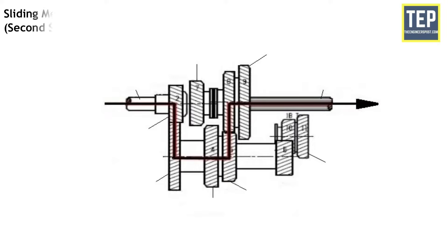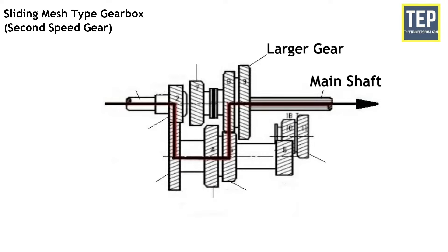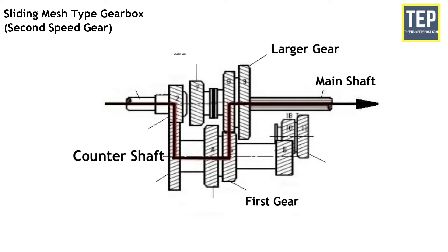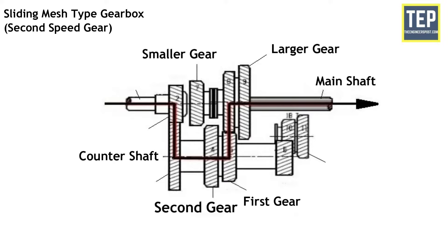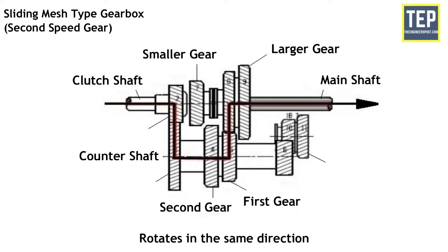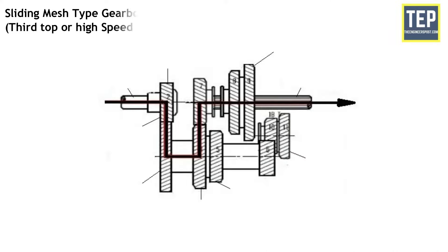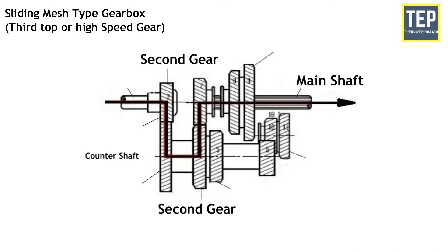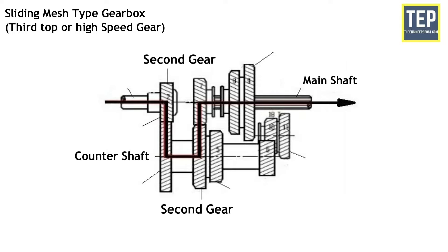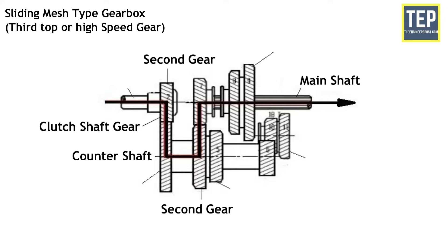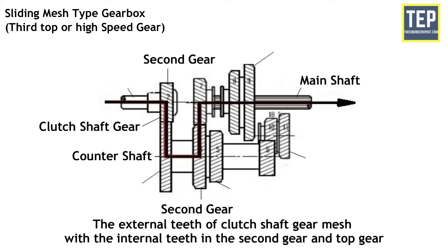By operating the gear shift lever, the larger gear of the main shaft is disengaged from the first gear of the counter shaft, and then the smaller gear of the main shaft meshes with the second gear of the counter shaft. In second speed gear, the main shaft and the clutch shaft rotate in the same direction. For third speed, the second and top gear of the main shaft is forced axially against the clutch shaft gear, so that the external teeth of the clutch shaft gear mesh with the internal teeth of the second and top gear.